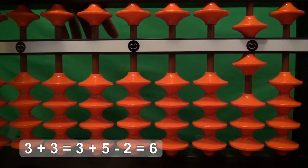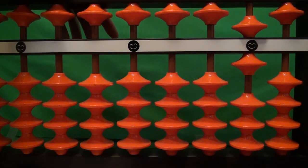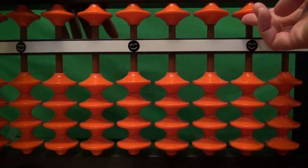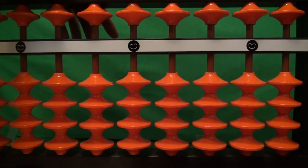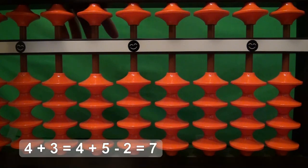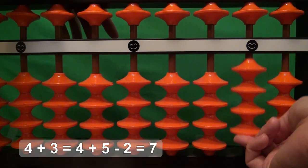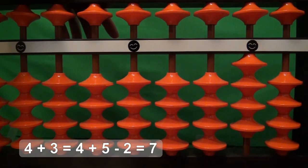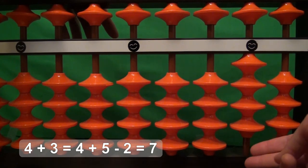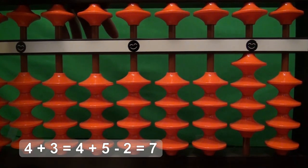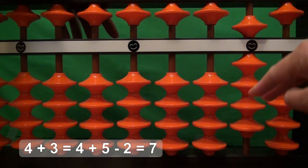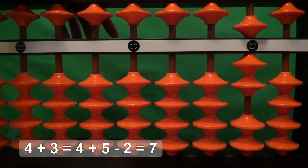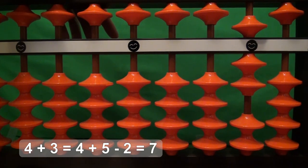Our next problem is four plus three. There's four. We want to add three, but again we have no beads available, so we will add five and take away two. That gives us the answer of seven. Four plus three equals seven.